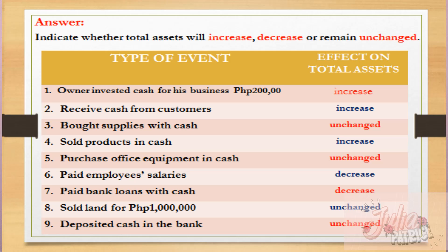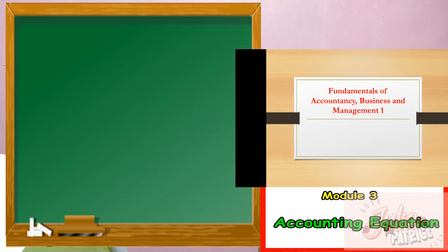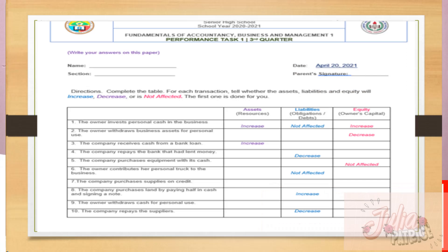I hope you got a perfect score. Now that we have analyzed the effect of business transactions under assets, it is time to check your understanding for the whole accounting equation. You may now get your first performance task and answer directly on the bond paper. Don't forget to write your name, your section, and your parents' signature.